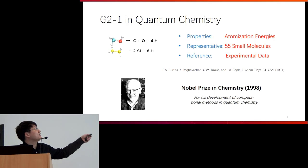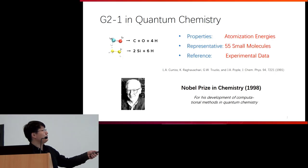The first of these is G2-221, which contains 55 small molecules. The references are atomization energies from experiment. The instrumental role of a test set has been well documented and realized in quantum chemistry and in computational materials science. The Materials Project is an excellent example in this direction.